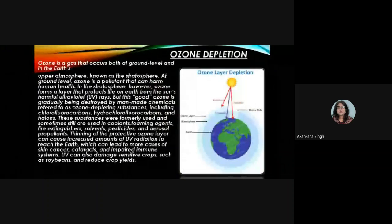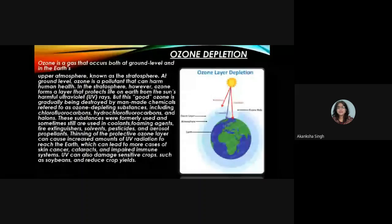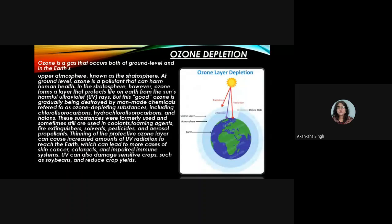A major effect of air pollution is ozone depletion. Ozone is a gas that occurs both at ground level and in the earth's upper atmosphere, known as the stratosphere. At ground level, ozone is a pollutant that can harm human health. In the stratosphere, however, ozone forms a layer that protects life on earth from the sun's harmful ultraviolet (UV) rays. This good ozone is gradually being destroyed by man-made chemicals referred to as ozone depleting substances, including chlorofluorocarbons (CFCs).